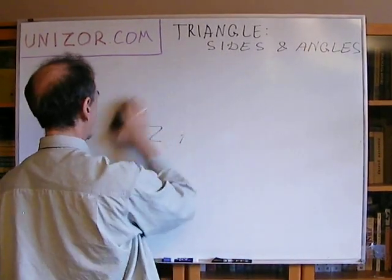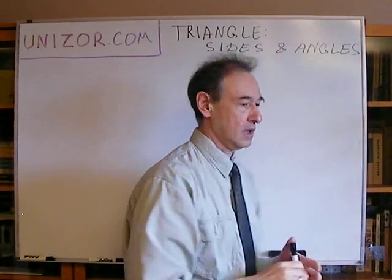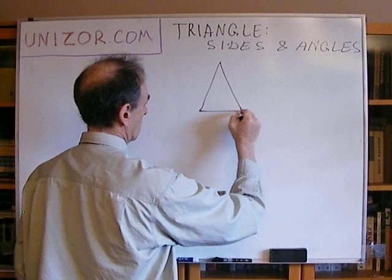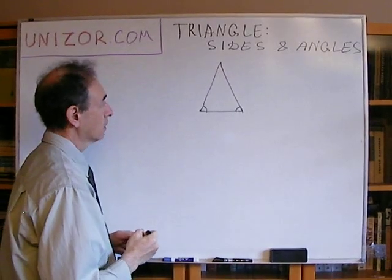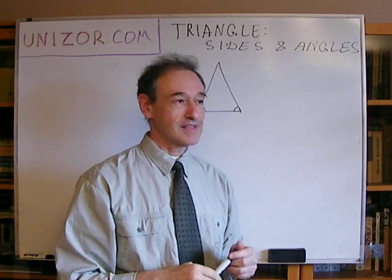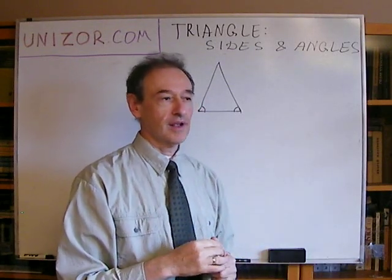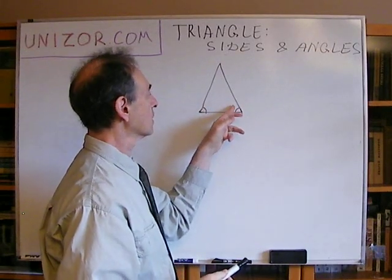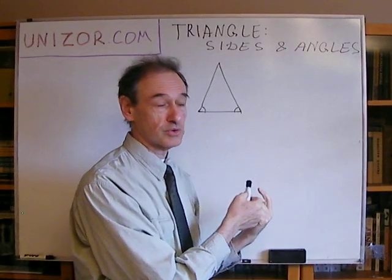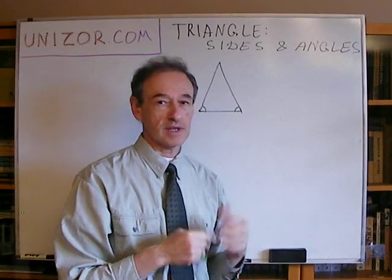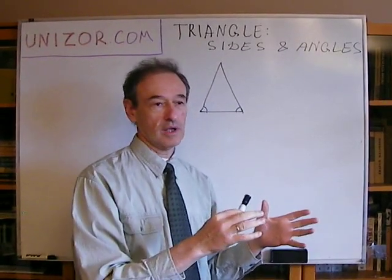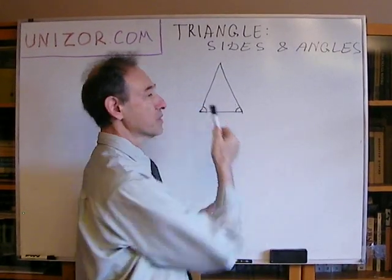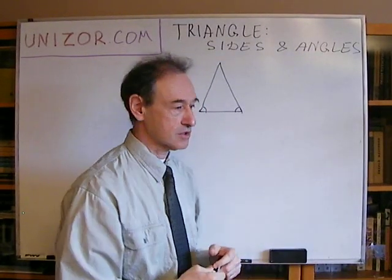Now, there are two, even easier, converse theorems. Number one, if angles are equal in a triangle, then the corresponding sides are equal. Well, it's actually very easy to prove, from the contrary. Well, if you consider that these sides are not equal, then one would be greater than another. And that's why the corresponding opposite angle will be greater than another. Because of the direct theorem, which I just proved. Which contradicts our initial preposition that the angles are equal. So, again, we are proving from the contrary.